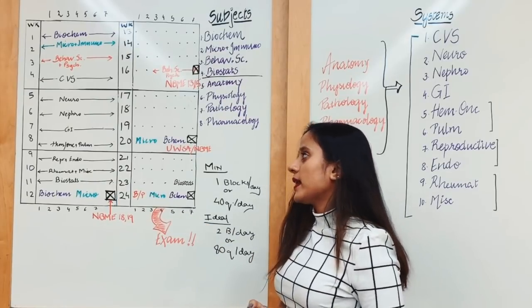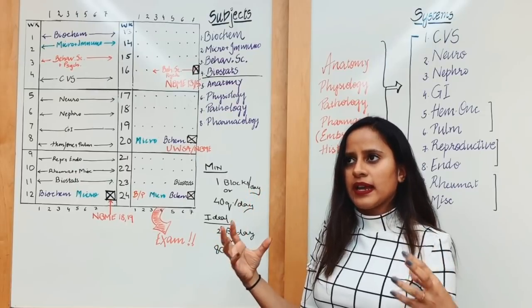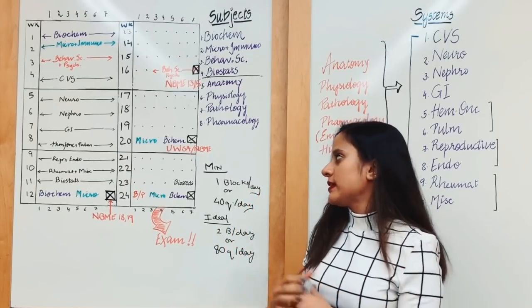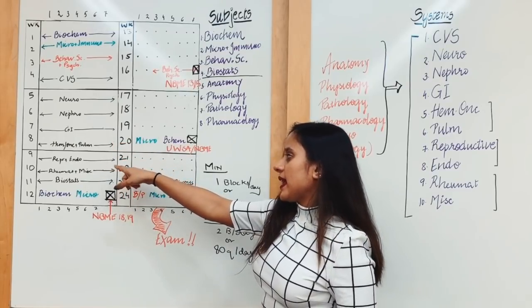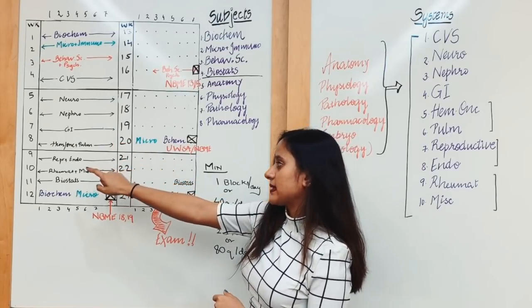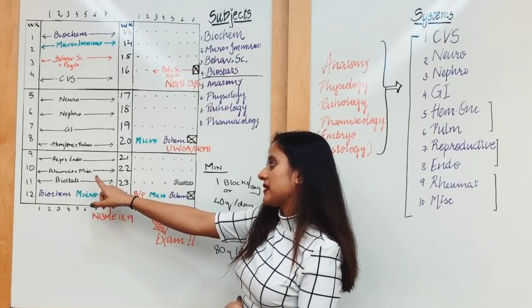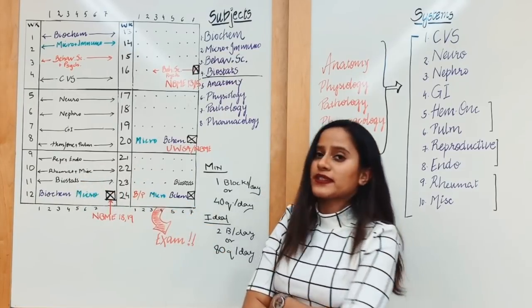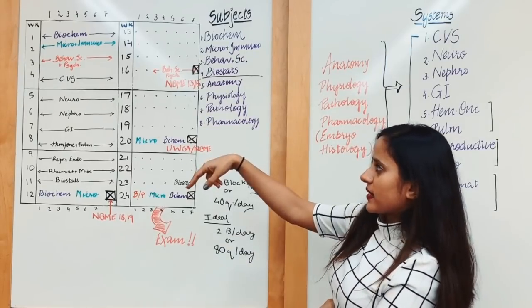For heme-onc and pulm, they're kind of small subjects, so I put them together because, well, I love heme-onc and I do like pulm too. They're not overwhelming subjects, so to put them together in a week is not as difficult. Your ninth week is going to be reproductive and endocrine, the tenth rheumatology and miscellaneous, and then eleventh is biostats again.